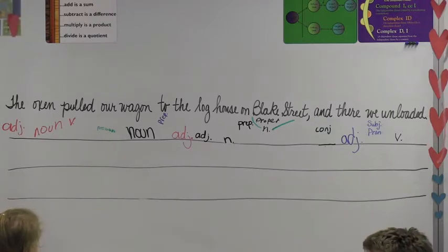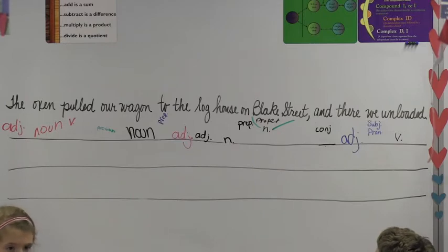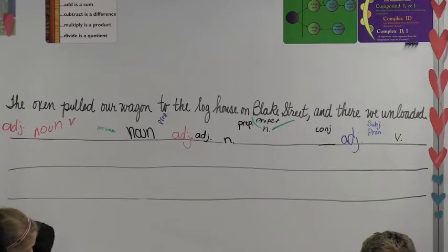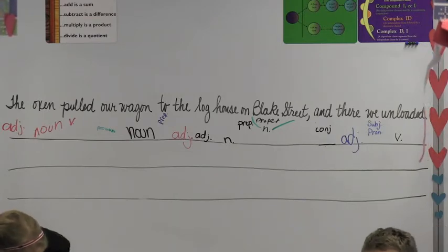Now, does anybody else see anything else up there that they're questioning? Steffar? Well, I'm not questioning it, but since and is a coordinating conjunction, then I know what structure the sentence is. Oh, if we have a coordinating conjunction, what kind of sentence are we going to have?